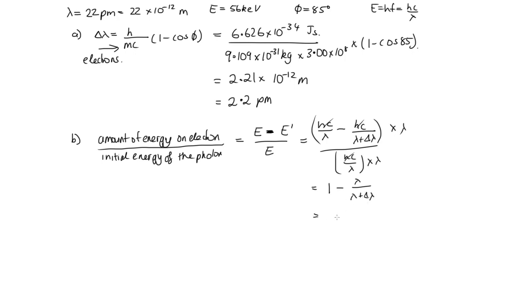Okay, so we'll simplify this algebraically by making lambda plus delta lambda a common denominator. So then we've got lambda plus delta lambda, that's this one, and then we need to minus lambda. So that will cancel, and we end up with delta lambda over lambda plus delta lambda.